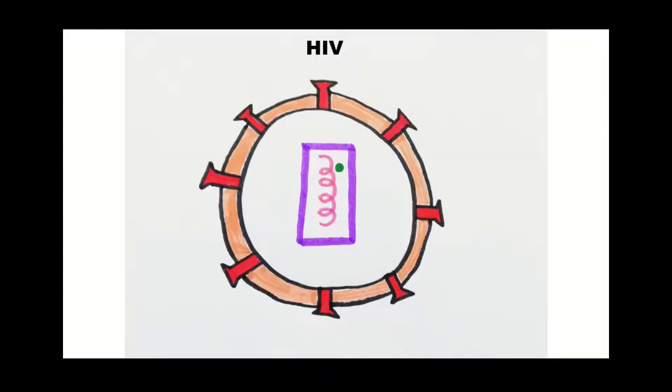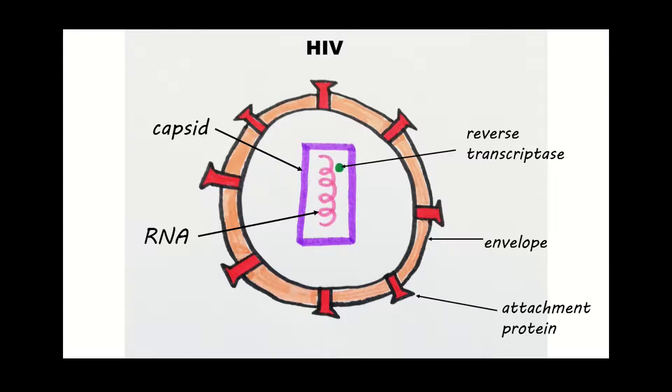All viruses consist of some genetic material enclosed in a protein capsid. In HIV the genetic material is RNA. An enzyme called reverse transcriptase is also present inside and this enzyme will be very important later. Outside the capsid, HIV is surrounded by another layer called the envelope which is studded with attachment proteins.